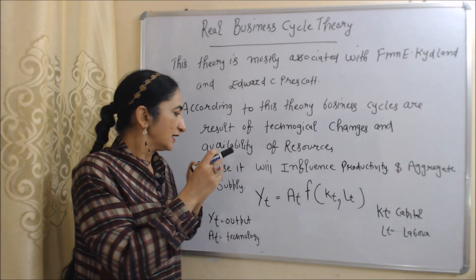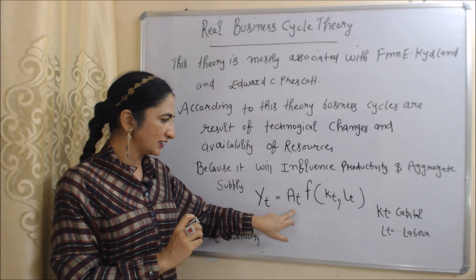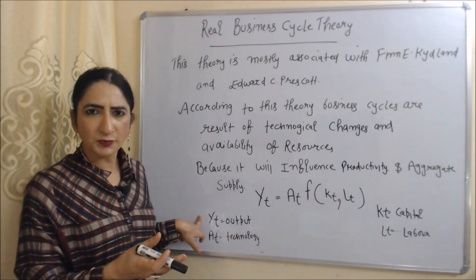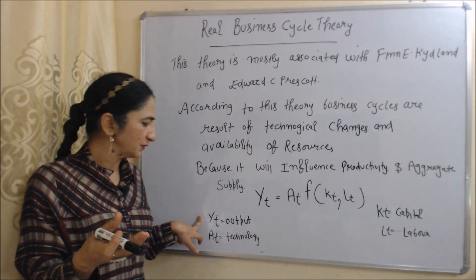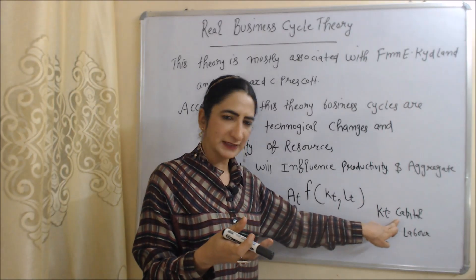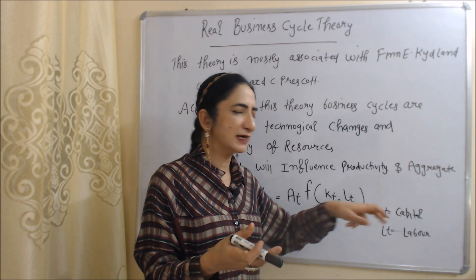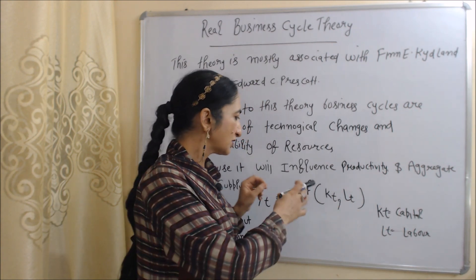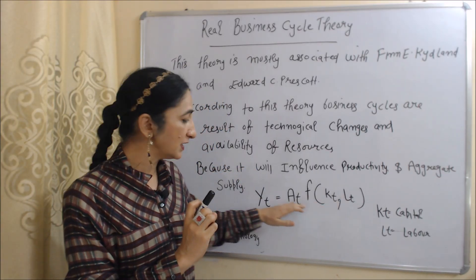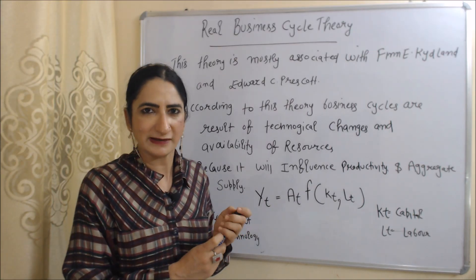In this equation you can see: Yt = At · f(Kt, Lt). Here Yt is our output or production in period t, At is technology in period t, Kt is capital in period t, and Lt is labor in period t. Since labor and capital are our resources, our available resources and technology influence production and eventually lead to business cycles.